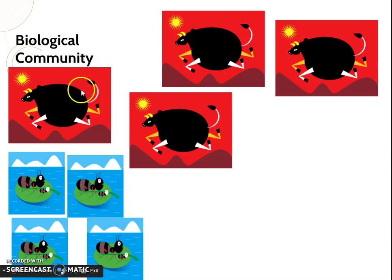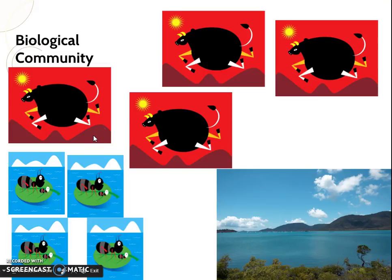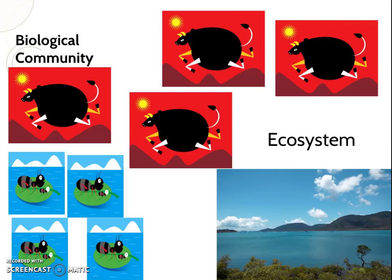So here we've got our ants and our bulls interacting and somehow they impact their ecosystem. If we add in abiotic factors, now we're doing an ecosystem study. So maybe these bulls and these ants live right next to a lake, and there's a buildup of nitrogen in the water because of all the waste from those animals. Now the nitrogen and the water are abiotic factors impacting our biotic factors, and our biotic factors are impacting our abiotic factors.